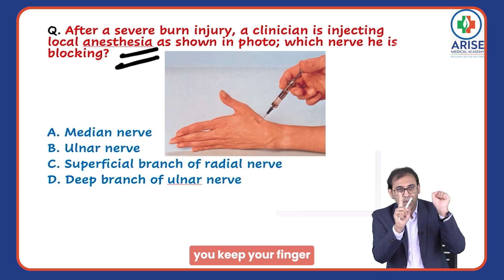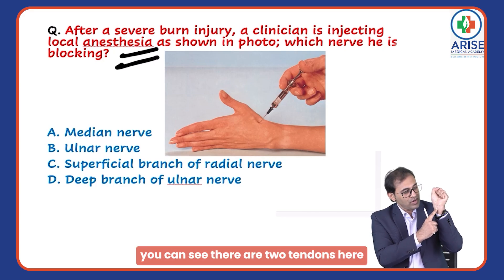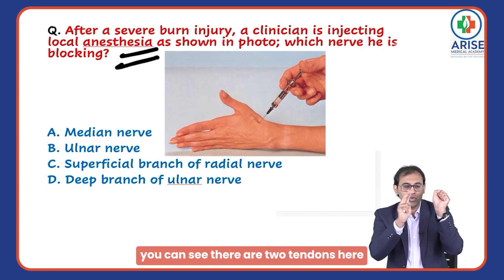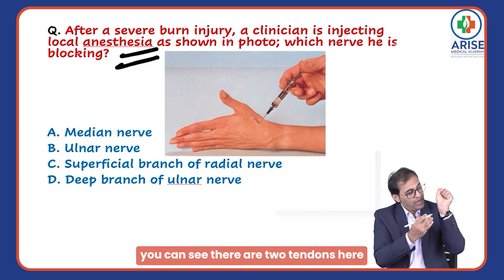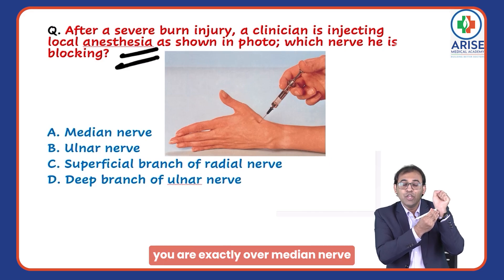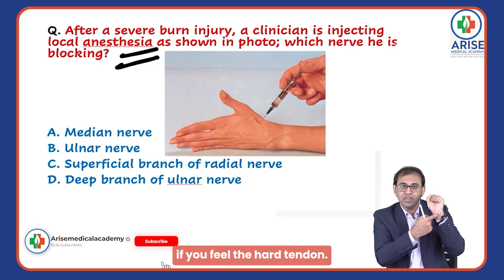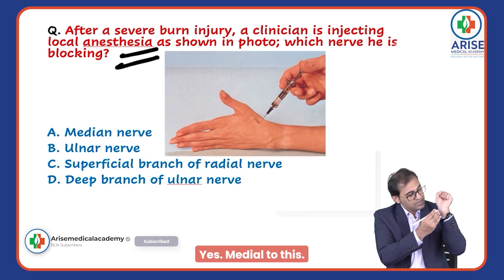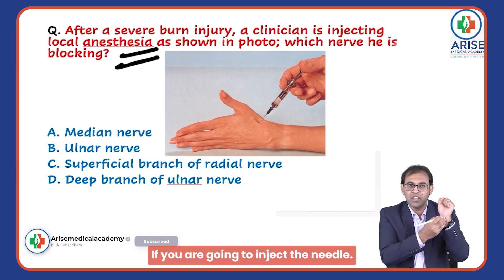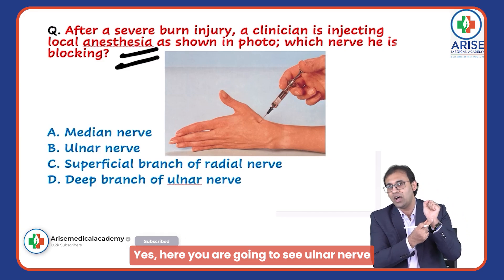Now keep your finger in the middle of the wrist. You can see there are two tendons here — in between the two tendons, if you inject a needle, you are exactly over the median nerve. For the ulnar nerve, at the medial side, feel the hard tendon; medial to this is where you inject for the ulnar nerve.